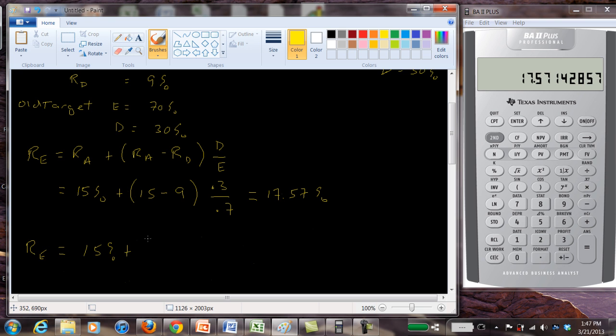Still going to be 15% plus 15 minus 9. In this case, it's going to be 0.5 over 0.5, which is 1. So that's going to be 15 minus 9 is 6. So this is going to be 21%. So we can see that the return that equity requires has gone up as we've increased the debt equity ratio from 0.42 to 1.